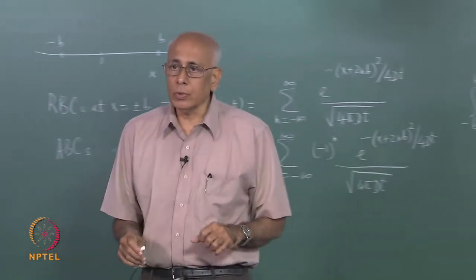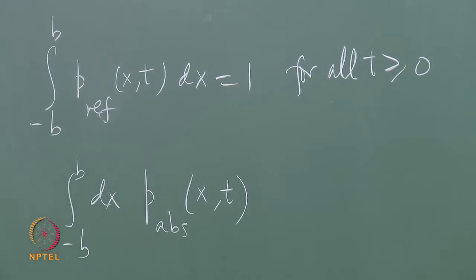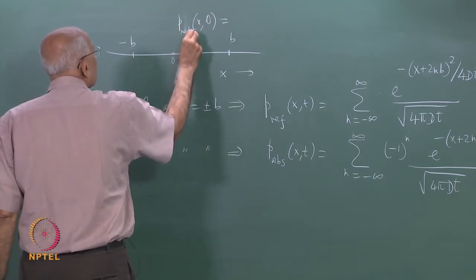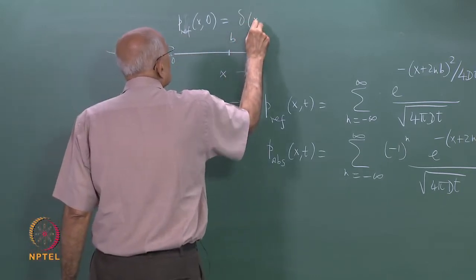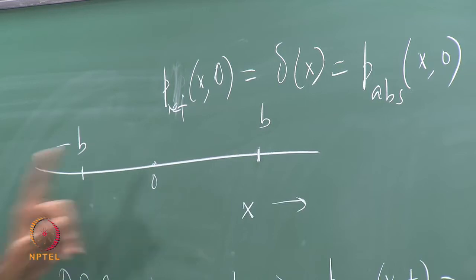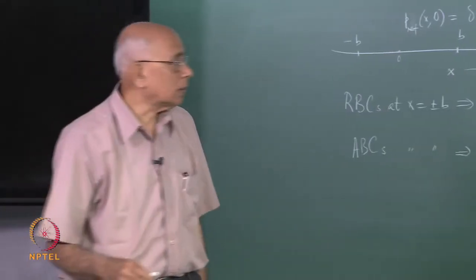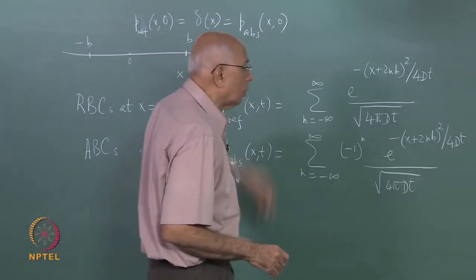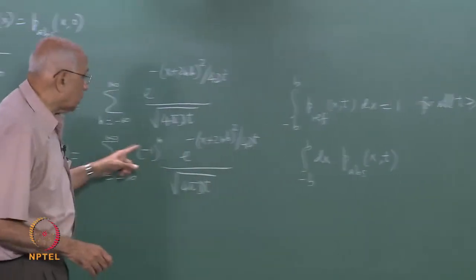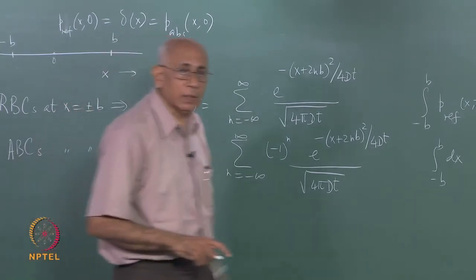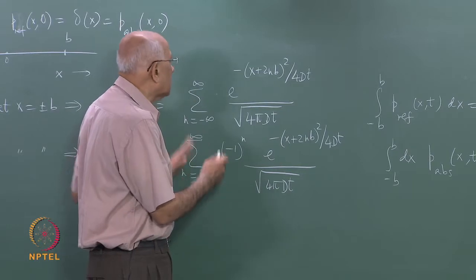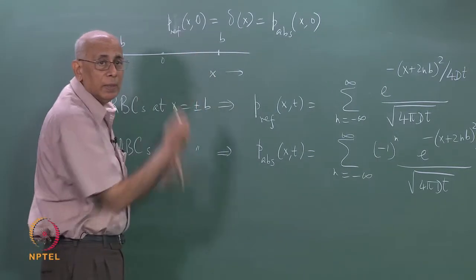It starts at 1 at t=0, because the initial condition p(x,0) = δ(x) is the same for both the absorbing and reflecting cases. I start with the particle at the origin and let it evolve via the diffusion equation. This quantity at t=0 is just the integral of a delta function, equal to 1, but because of the (-1)^n factor it decreases as time increases. This integral equals the total survival probability that the particle is still in the region between minus b and b without having been absorbed.